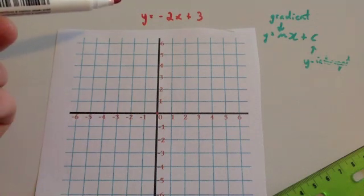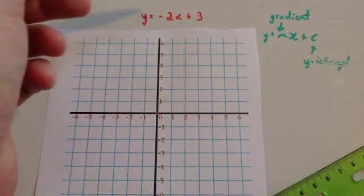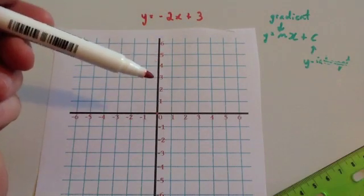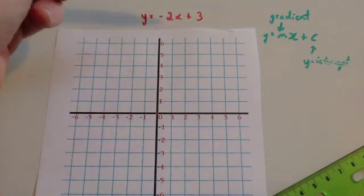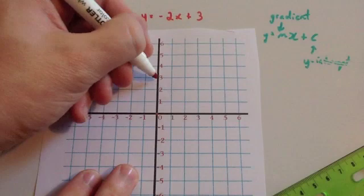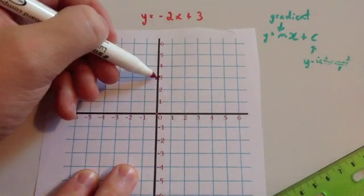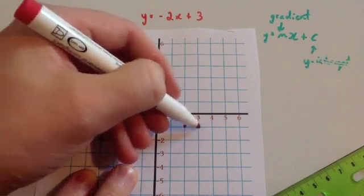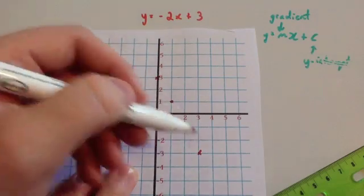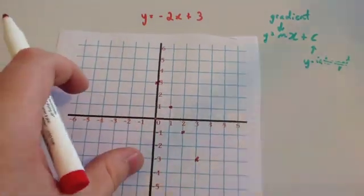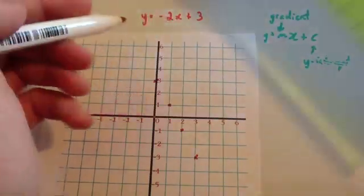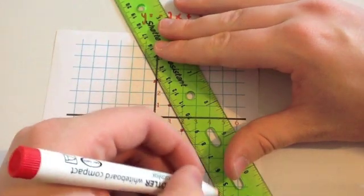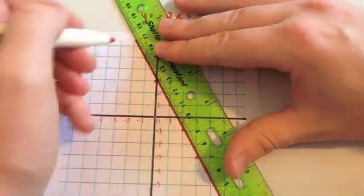This time we're going to draw the graph y equals minus 2x plus 3. The y-intercept is 3 and the gradient is minus 2, which means as you go across 1, you go down 2. So we put the y-intercept at 3, then across 1, down 2, across 1, down 2, across 1, down 2. You've got your points — just get your ruler, draw a nice straight line through them. And that's the graph y equals minus 2x plus 3.